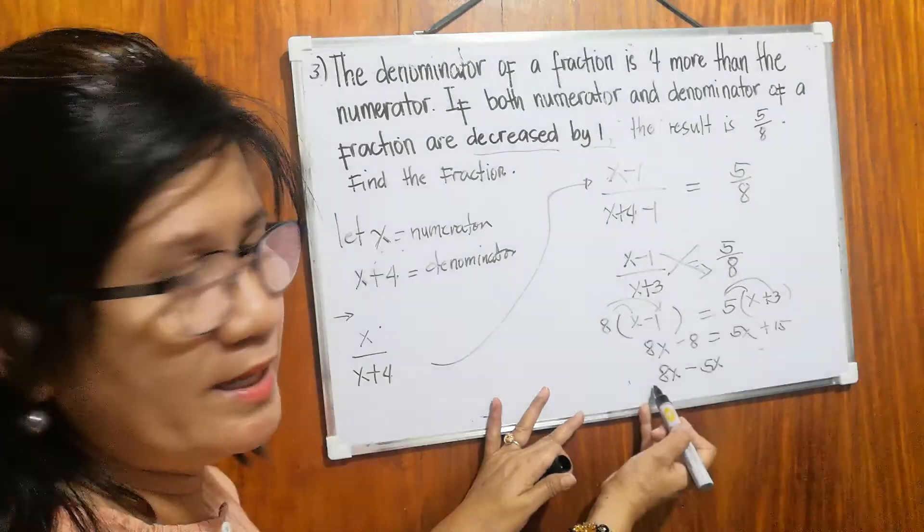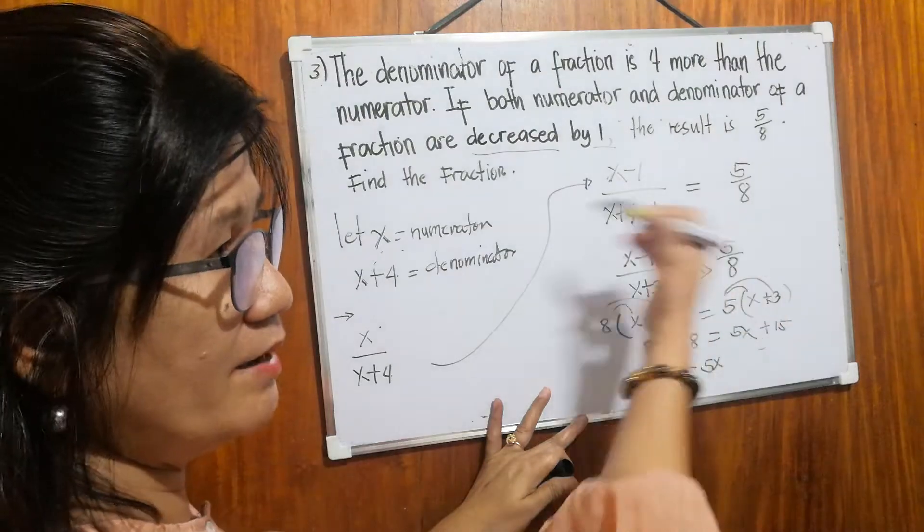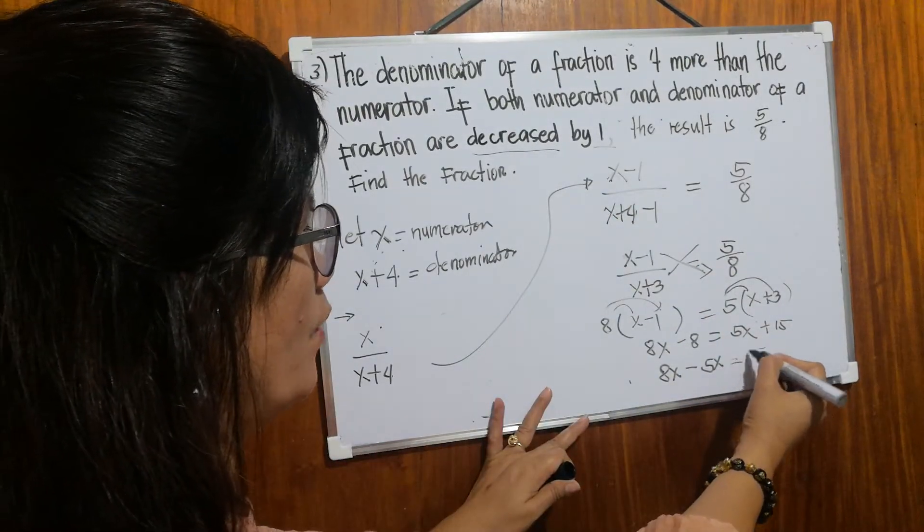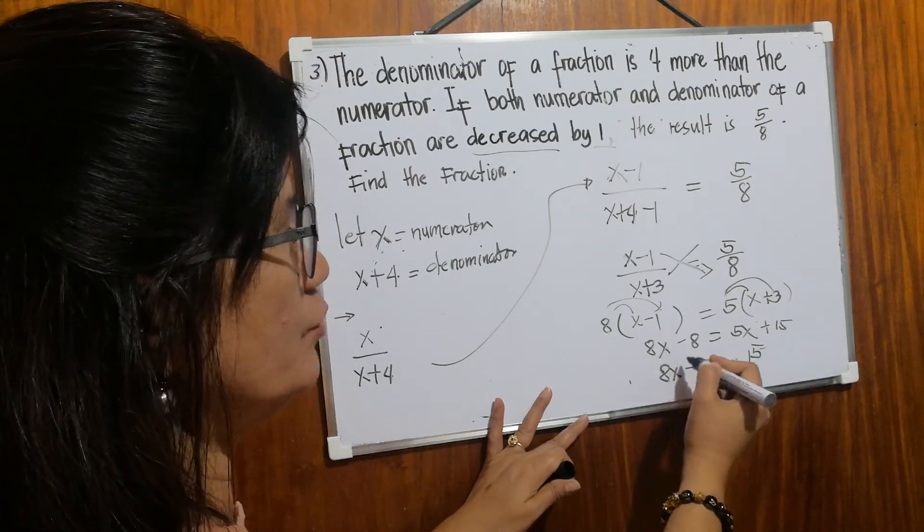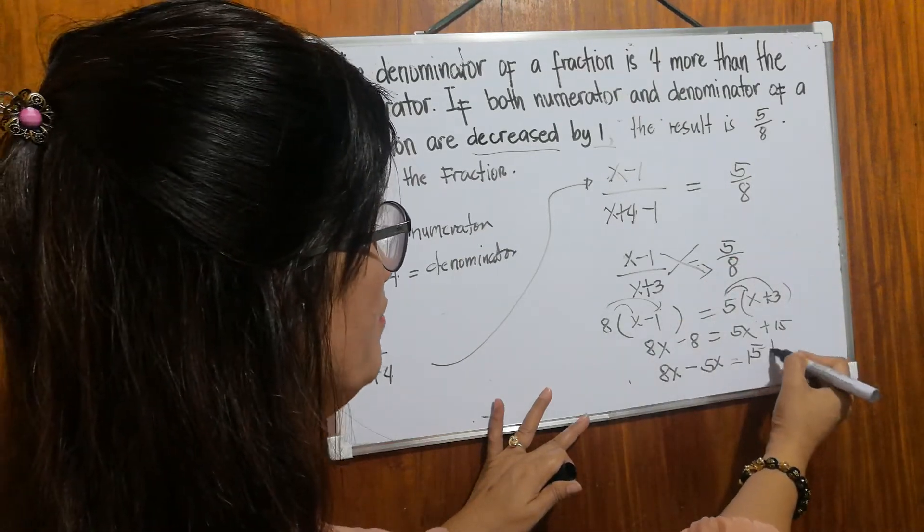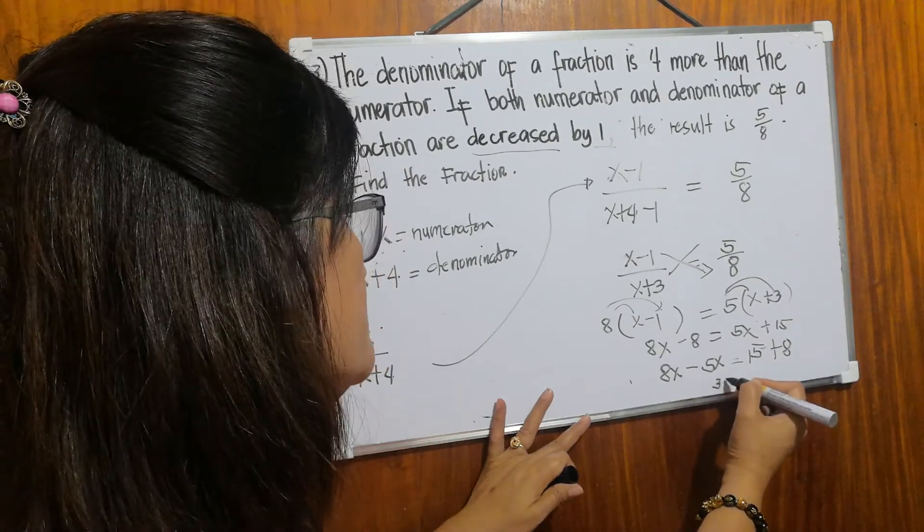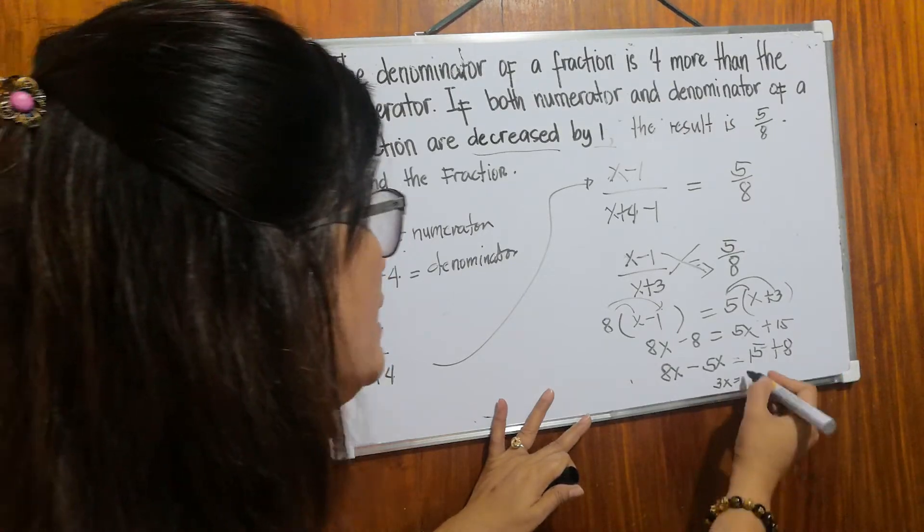Equals fifteen. Then let's move negative eight, it becomes positive eight. So we have 3x equals twenty-three.